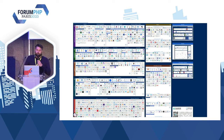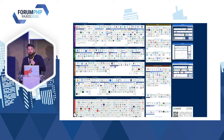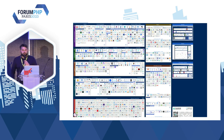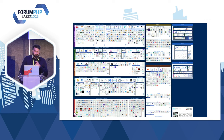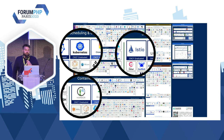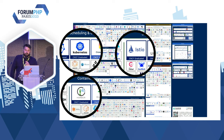Quand on parle de cloud, on parle de choix technologiques — les choix que vous allez faire en début de projet. Les choix technologiques qu'on a dû faire, on a dû prendre en compte beaucoup de critères. Mais on s'est surtout attardé sur la taille de l'équipe, les moyens financiers et les compétences qu'on avait déjà dans l'équipe. Pour notre stack technologique, on a choisi d'utiliser Kubernetes, Argo et Istio — des outils parmi les plus matures.